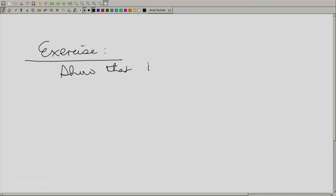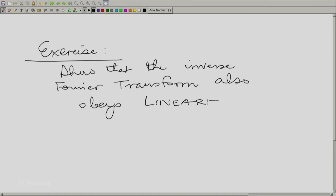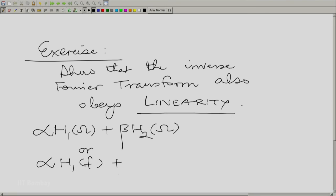The exercise that I am going to leave for you to do is as follows: show that the inverse Fourier transform also obeys linearity. In other words, α times H1(ω) plus β times H2(ω), or correspondingly with the cycles per second frequency, would have the Fourier inverse α times H1(t) plus β times H2(t). We shall take up a few more properties of the Fourier transform in the next session. Thank you.